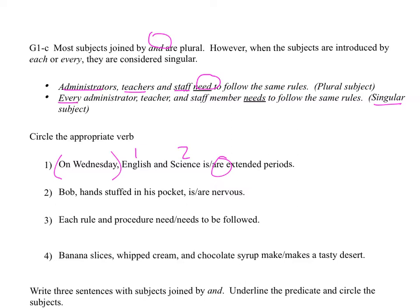Second: Bob, hand stuffed in his pocket — that's your absolute phrase — is nervous. Bob is our singular subject, so the circle is.